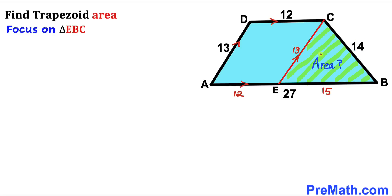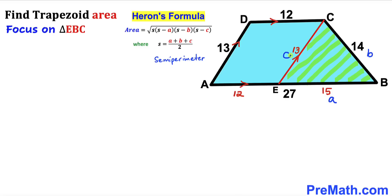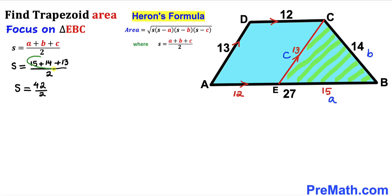Now let's focus on triangle EBC, whose side lengths are 13, 14, and 15. We will use Heron's formula to calculate the area of this triangle: Area equals the square root of S times (S minus a) times (S minus b) times (S minus c), where S equals (a plus b plus c) all over 2 — the semi-perimeter. So S equals (15 plus 14 plus 13) over 2, which equals 42 over 2, giving us S equals 21.